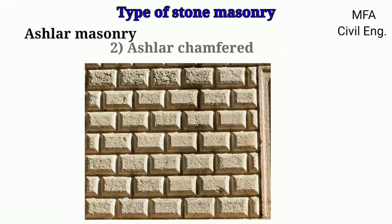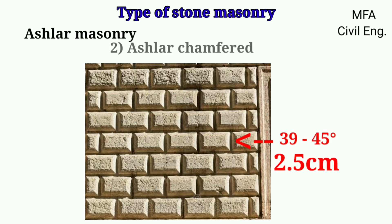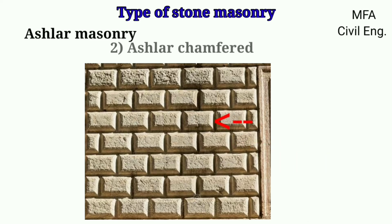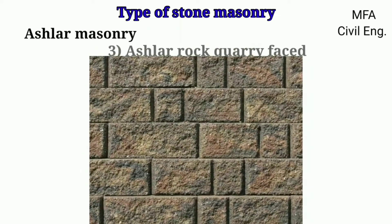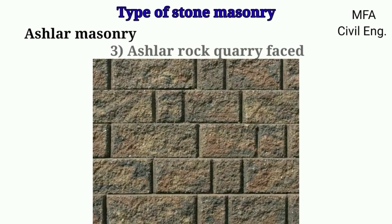Ashlar chamfer masonry is very similar to ashlar fine masonry, with the difference that the angles of stones are chamfered at an angle of 39 to 45 degrees for a depth of about 2.5 cm. The joints are thin and the faces of the stones are smooth.